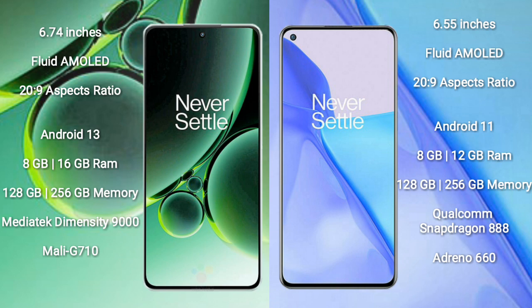The OnePlus Nord 3 comes with 8GB or 16GB RAM and 128GB or 256GB internal storage, powered by the MediaTek Dimensity 9000 processor and a Mali-G710 GPU.